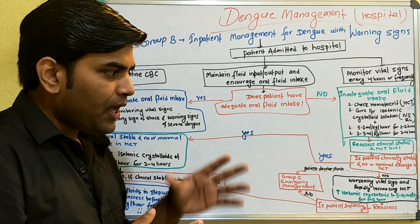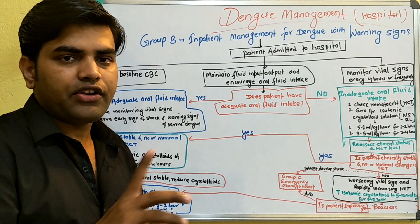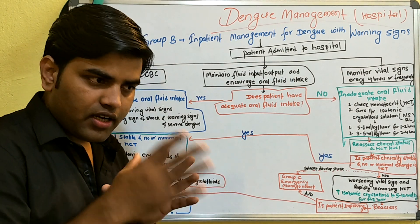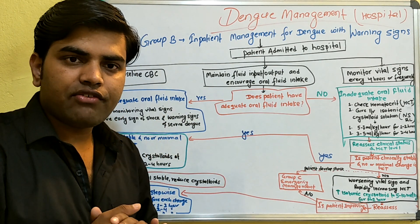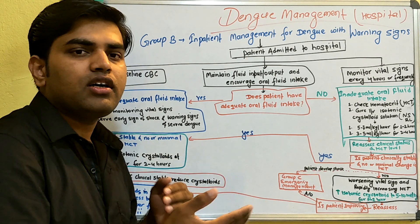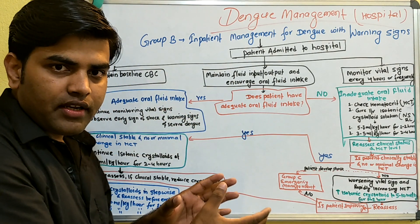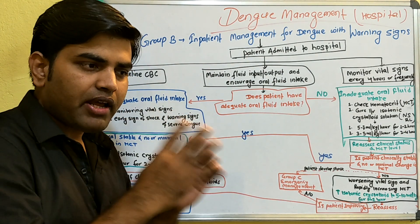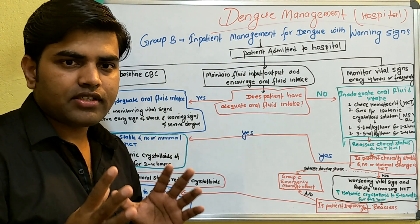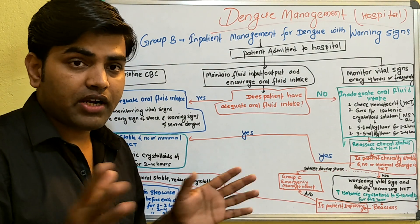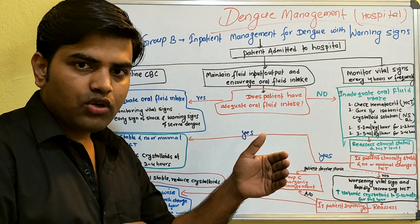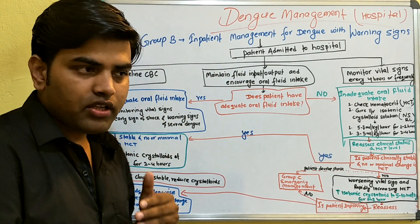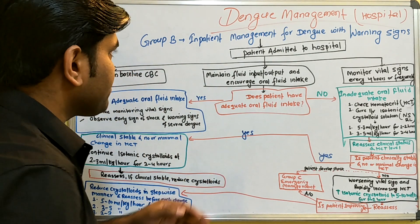Group B patients should be managed in hospital because they already have warning signs with risk factors. Without warning signs, you manage in the outpatient setting — following CBC, platelet count, hematocrit level, signs of dehydration, and monitoring the transition from the febrile phase to the critical phase. Group C management, which involves ICU care, will be discussed in the next lecture.